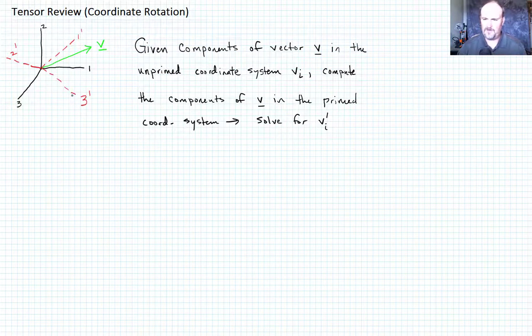And then I drew some green vector v, and the goal here is what I've written down. We want to say, if we already know the vector v in the unprimed coordinate system, the original black coordinate system, and those components are v sub i, can we compute the components of v in the prime coordinate system? That is, we want to solve for v sub i prime. So how do we do this?